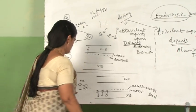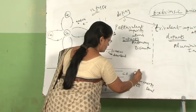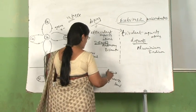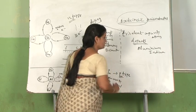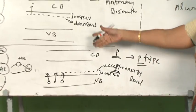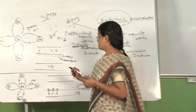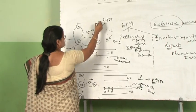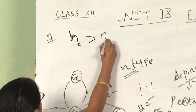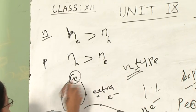In the case of trivalent doping, an acceptor energy level is produced which increases positively charged holes, so the material is called P-type. P-type semiconductor has positively charged holes as majority carriers and electrons as minority carriers. In summary: in N-type, the number density of electrons is greater than that of holes; in P-type, the number density of holes is greater than that of electrons.